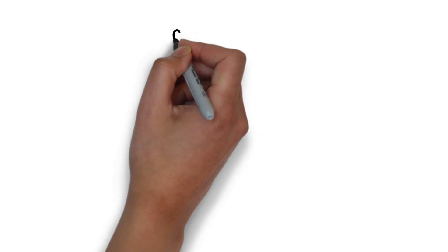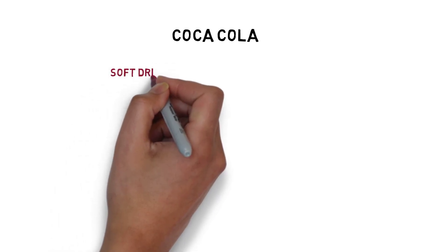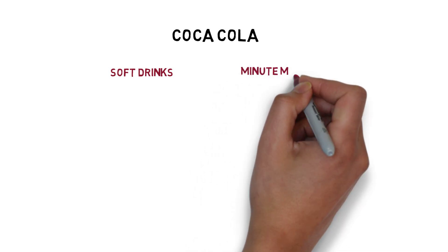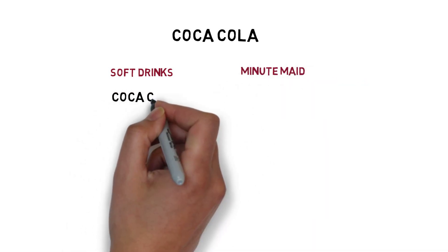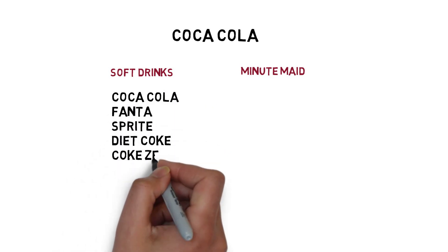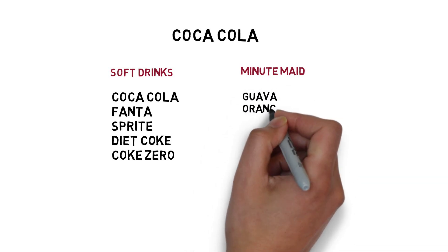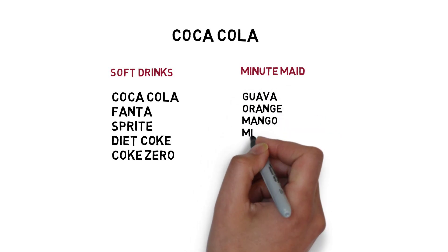Now, we can discuss another example for product mix. Let's take an example of Coca-Cola. Assume that Coca-Cola oversees two product lines: soft drinks and juice. In soft drinks are Coca-Cola, Fanta, Sprite, Diet Coke, Coke Zero. Products classified as Minute Maid juice are Guava, Orange, Mango, and Mixed Fruit.